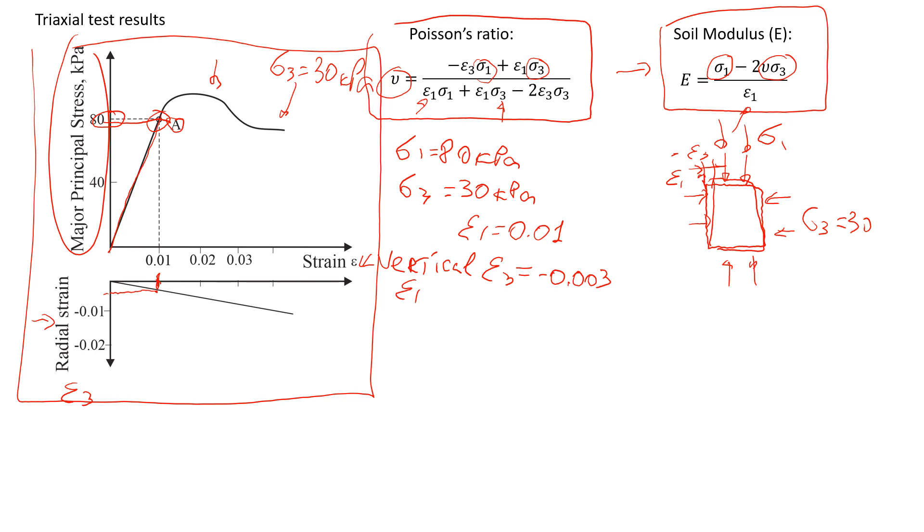Using this data now, let's estimate the Poisson's ratio. We're just going to use the formula. Poisson's ratio equals negative radial strain, negative 0.003, times major principal stress, which is 80, plus axial deformation, 0.01, times minor principal stress, 30, divided by 0.01 times 80 plus 0.01 times 30 minus 2 times negative epsilon3, which is 0.003, times minor principal stress, which is 30 kPa.